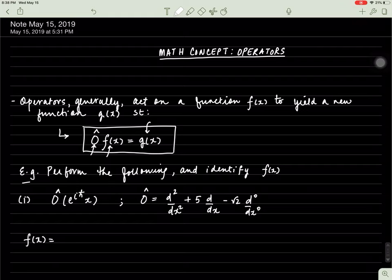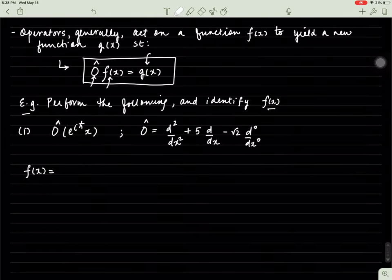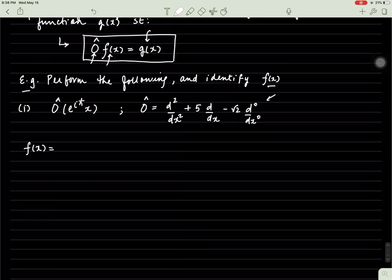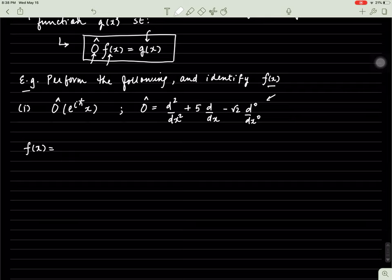We have to perform the following operations while also identifying what f of x is. For the first one, the operator is equal to this whole thing, and f of x is clearly e to the exponent i h x. I can rewrite this equation as such. I rewrite the operator as this, and then this operator will act on this function.